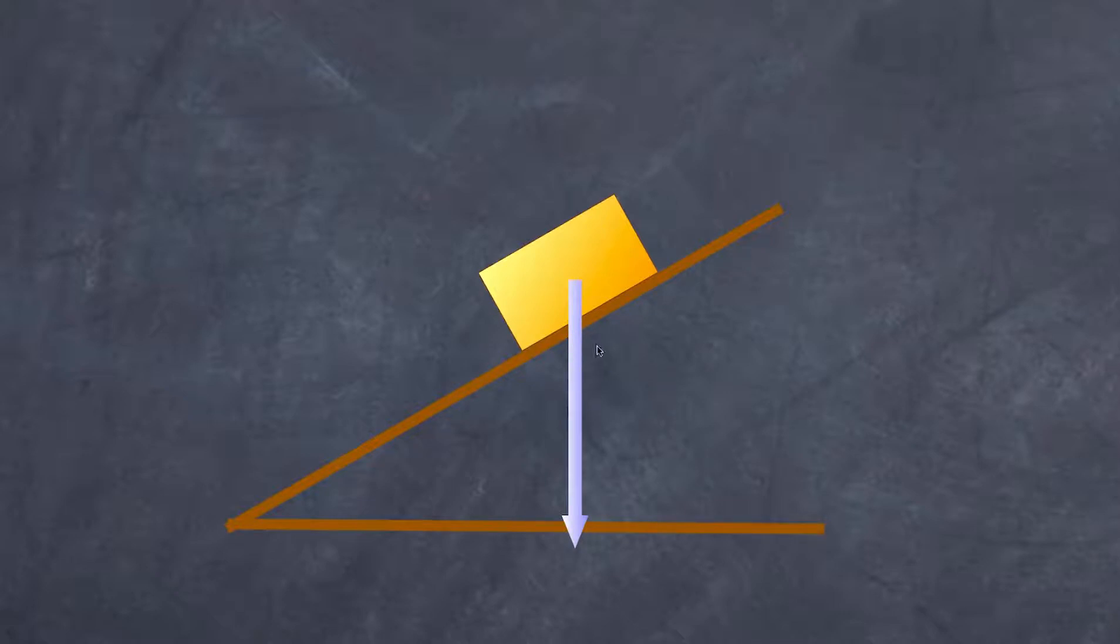Now what that does is it does two things. First of all if we break that up into components we have a force pushing into the surface at right angles here. The second thing we have of course is that we have a component that is acting down the plane. So these two green vectors are actually components of the force of gravity acting on the block.